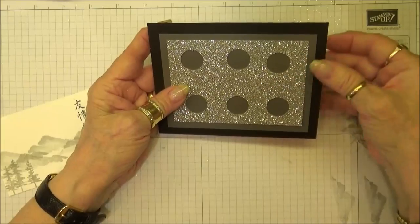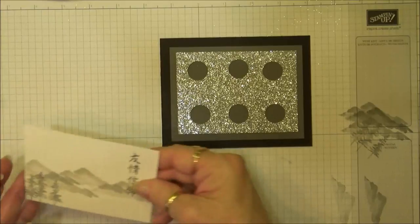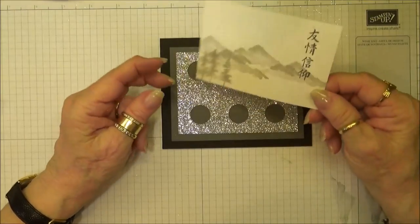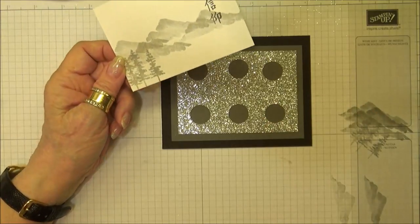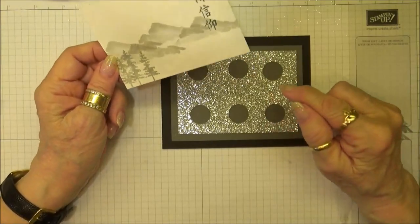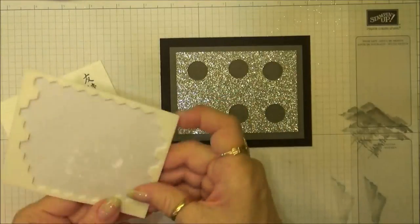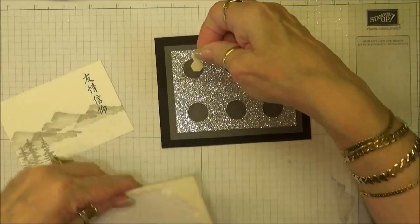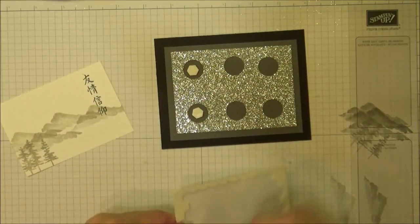Ordinarily, gluing this cardstock to the glimmer paper can be quite difficult because it's such a bumpy surface. This is my trick: I punch the holes out and then put dimensionals in the openings that I've created.